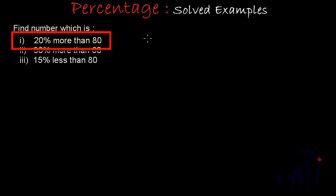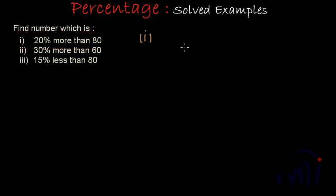The first problem: we have to find a number which is 20% more than 80. If we can find 20% of 80 and then add it to 80, the new number will be 20% more than 80.